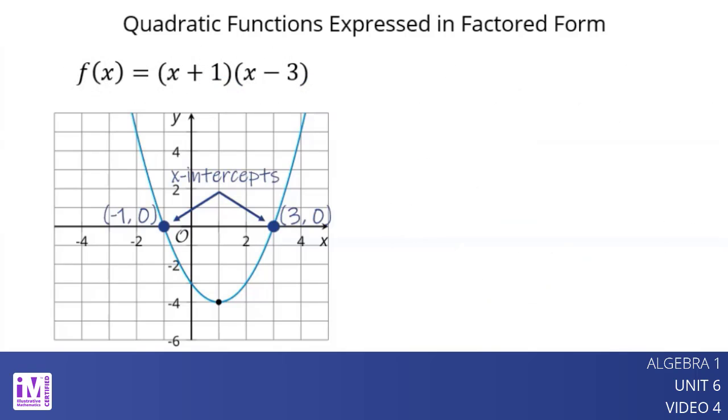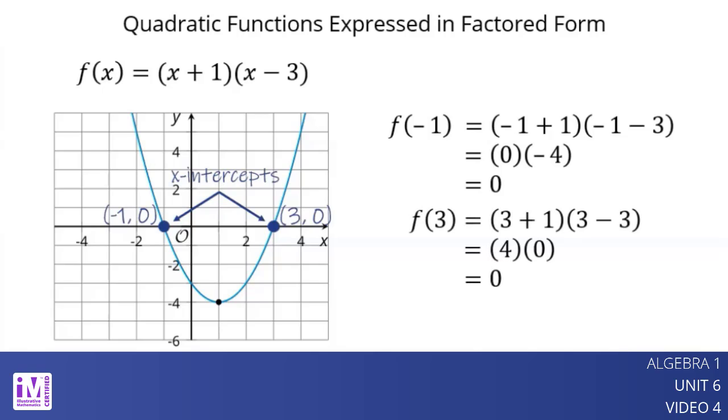Because the inputs negative 1 and 3 produce an output of 0, they are both zeros of the function. And because both x-values have 0 for their y-value, they also give us the x-intercepts of the graph.